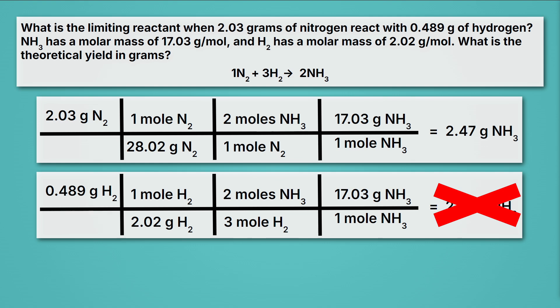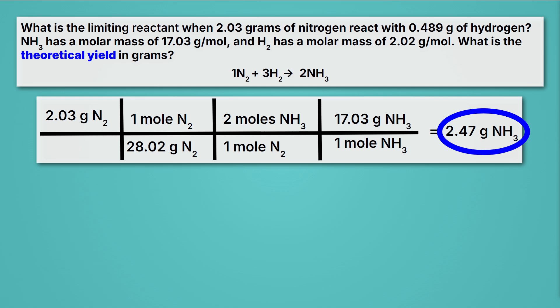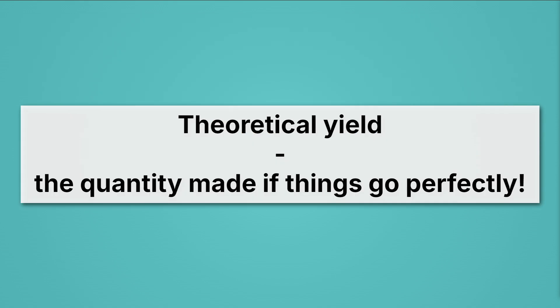Now, let's go ahead and get rid of that whole bottom line, and let's think about what our limiting reactant is. What's our limiting reactant? Well, it's nitrogen. Remember, a limiting reactant must be a reactant. And nitrogen is what makes less ammonia. What, then, is our theoretical yield? Our theoretical yield has to be the 2.47 grams of NH3. That's how much NH3 we could make if everything went perfectly. Keep in mind that a theoretical yield has to be an amount of product, and that the theoretical yield has this definition: it's the quantity made if things go perfectly.